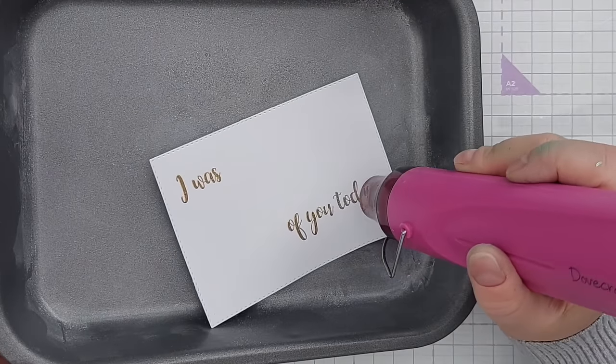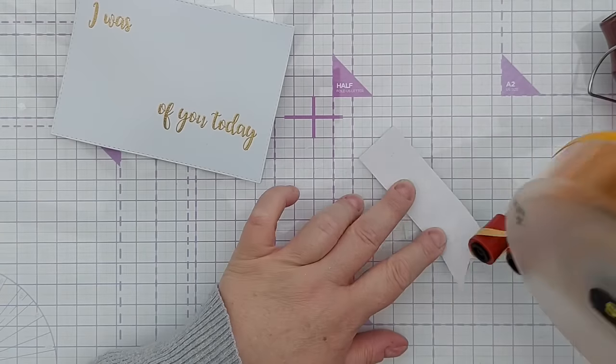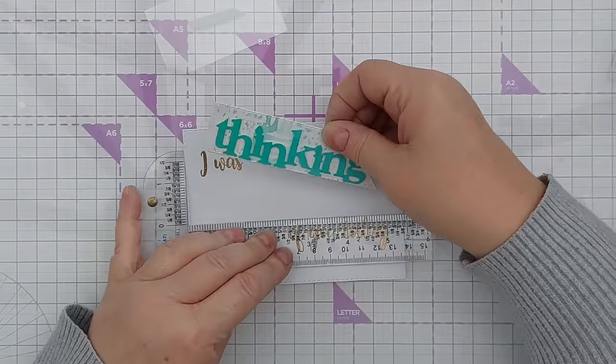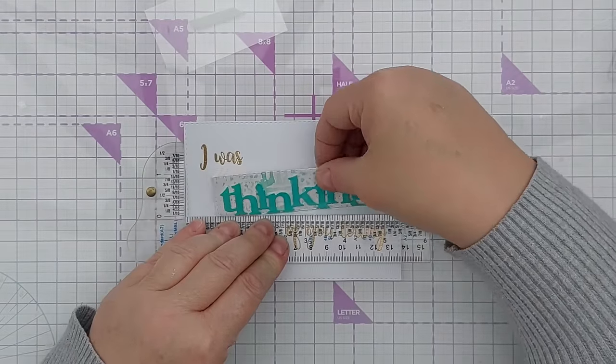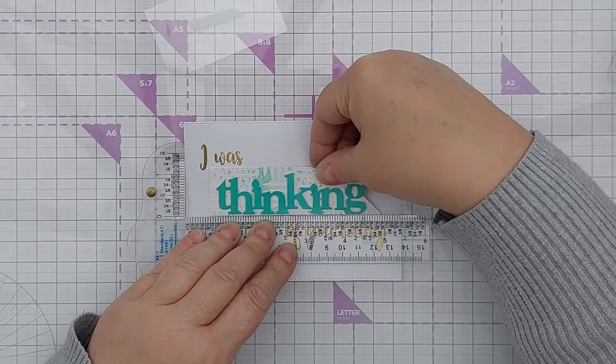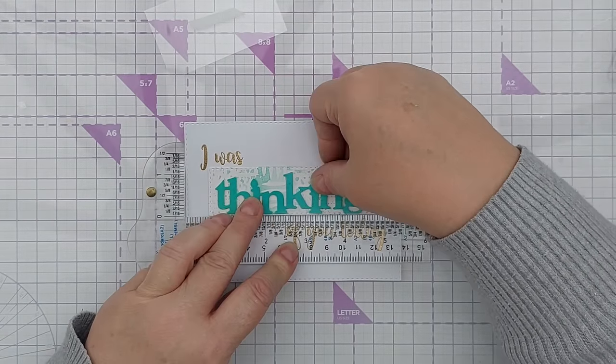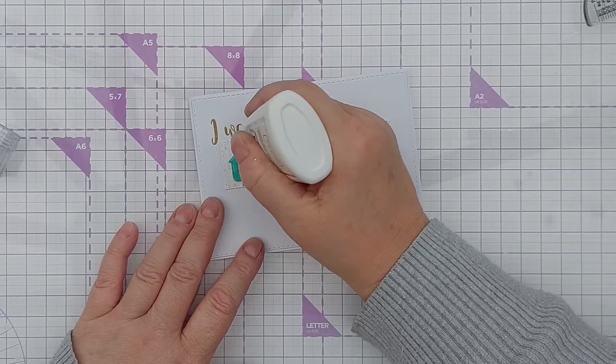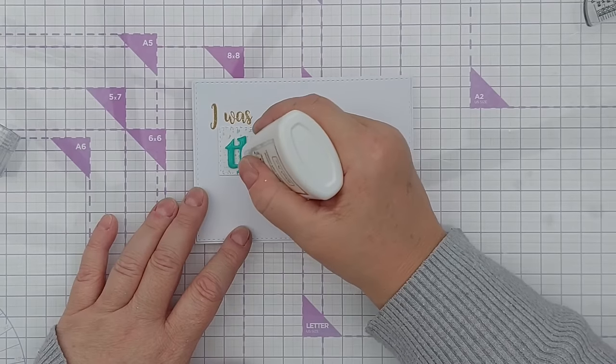Once that was cooled and set I used tape runner to stick the banner in between the two pieces of the sentiment using my T-square ruler to get it nice and straight on the card.